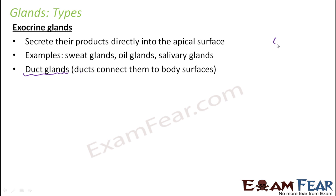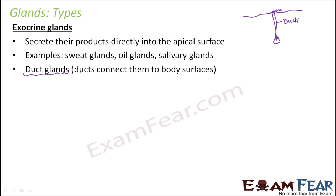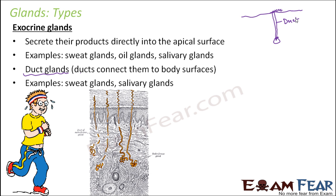The reason ducts are needed is that the gland may be located somewhere inside the body while the body surface is elsewhere. So there has to be a tube-like structure — a duct — to carry the secretion to the surface. For example, you can see the salivary glands are located here, and they have ducts through which the secretion is produced at the surface.